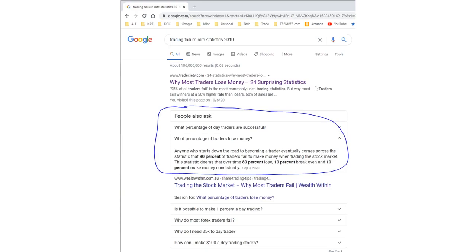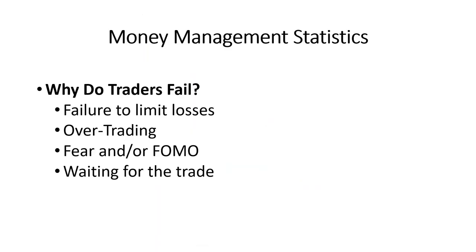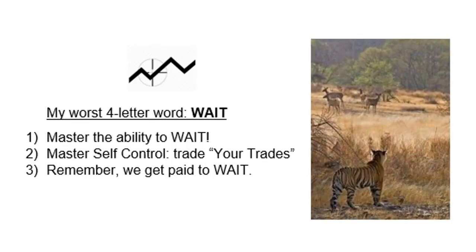With prop firms and funding firms available now, it's a little easier to use somebody else's money, but it still rests with you. Why do traders fail? Failure to limit yourself and overtrading. When I first started, in the course of a day I had 100 trades and I wasn't even trying to scalp. Fear of missing out — you get in a little early instead of waiting. We're not traders, we're waiters. My worst four-letter word is 'wait.' I'm impatient — that's why I like NASDAQ. I need the adrenaline rush.